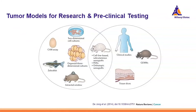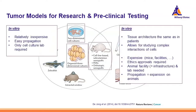Let's take a look at the different tumor models you can use in cancer research and preclinical testing. You can see an overview of different models — some quite exotic ones like the zebrafish, which is commonly used these days — but the most important are the in vitro models such as 2D and 3D cultures, and of course the xenograft in vivo models for more complex assays and studies.